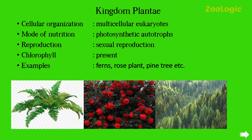Kingdom Plantae consists of multicellular eukaryotes. Their mode of nutrition is photosynthetic autotrophic — autotrophs can prepare their own food, and photosynthetic means they do so through photosynthesis. Sexual reproduction takes place in Kingdom Plantae. Chlorophyll is present in them. Examples include ferns, rose plants, pine trees, etc.